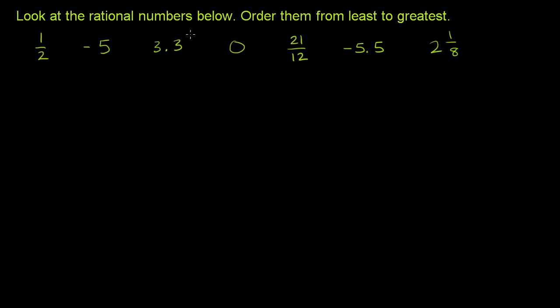We're told to look at the rational numbers below, order them from least to greatest. They really didn't have to tell us this first sentence. I would have known to look at the rational numbers to order them from least to greatest.